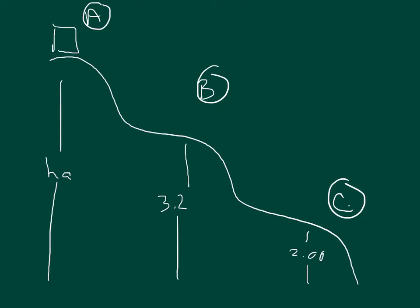Problem 16: a block of mass m = 4.1 kilograms is released from rest from point A and slides on a frictionless track as shown in the figure below. Assume H_A = 6.9 meters. Part A: determine the block speed at points B and C. Part B: determine the net work done by the gravitational force on the block as it moves from point A to point C.